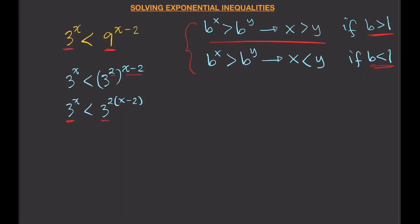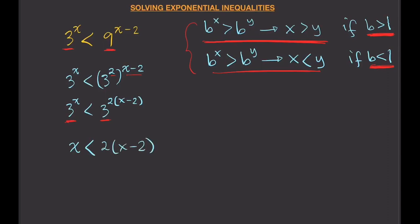Now we have equal bases. Remember: if b is greater than 1, follow the first rule; if b is less than 1, follow the second. Here our b is 3, which is greater than 1, so we just follow the direction of our inequality. Since we have less than, we keep less than: x < 2(x−2).